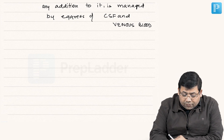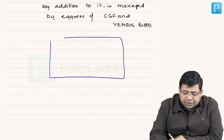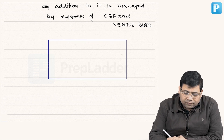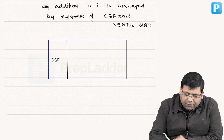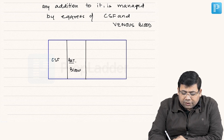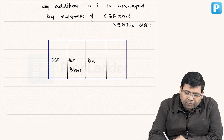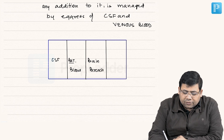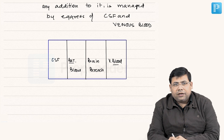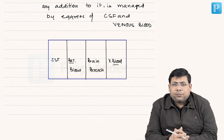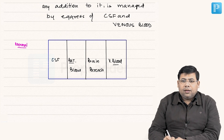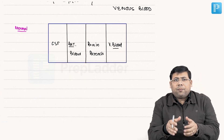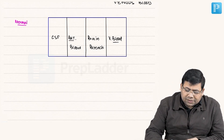Imagine the skull to be like this. The skull is a closed vault, and its components are: CSF, the most important component — arterial blood, brain parenchyma, and venous blood. These are the four things we have, and there is no empty space. Any addition to the normal skull will be a problem because there is no vacant space.